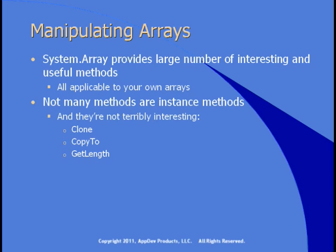GetLength returns the length of any dimension within an array. There's GetLowerBound, which gets the lower bound of any dimension — and they're pretty much all zero. GetUpperBound gets the upper bound of any dimension. Remember we had an array with 50 rows and two columns? You could ask for the GetUpperBound of the zeroth dimension — that'd be 50 — or the GetUpperBound of the second dimension — that'd be 2.